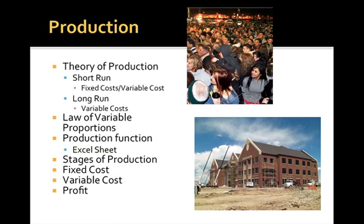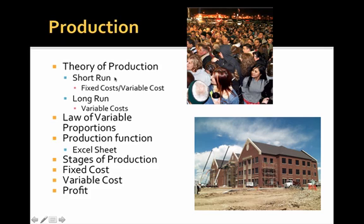On this slide you're going to see all the different things that we're going to learn today. The first thing under the theory of production that we want to talk about is something called the short run. Now these are periods not measured by time. I can't tell you the short run is a year or the long run is 10 years. They're not periods of time.